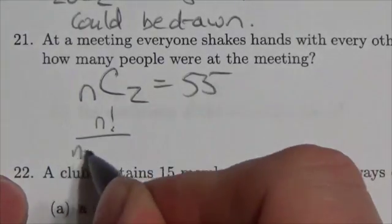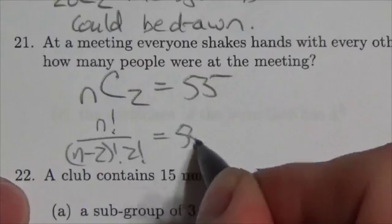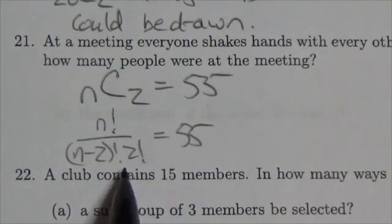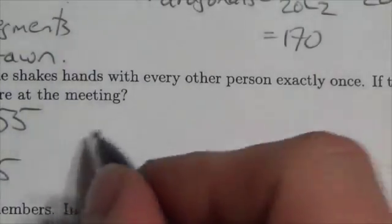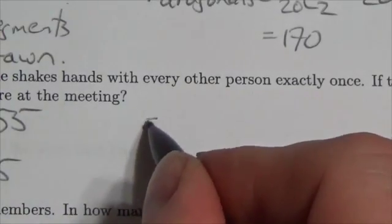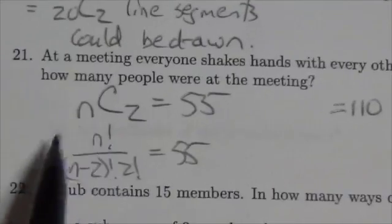So this becomes n factorial over (n minus 2) factorial times 2 factorial equals 55. Okay, so the first thing I'm going to do is move that 2 factorial up, and so this is going to end up being n factorial divided by (n minus 2) factorial equals 110.